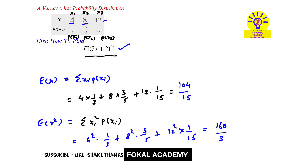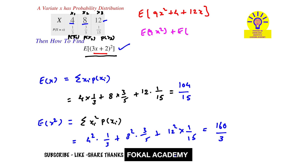Expand E[(3x + 2)²]. Using the (a + b)² form, it becomes E[9x² + 12x + 4]. Applying the expectation operator to all terms, this becomes E[9x²] + E[12x] + 4.